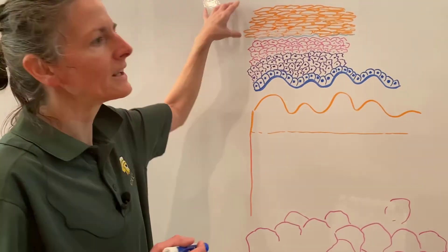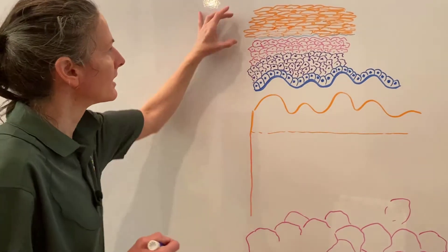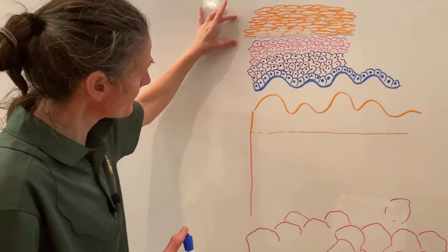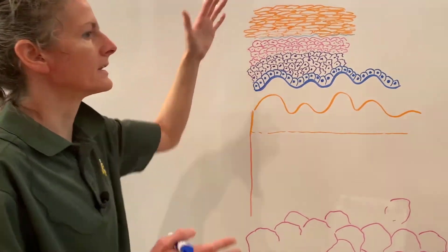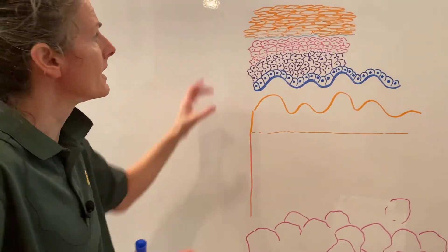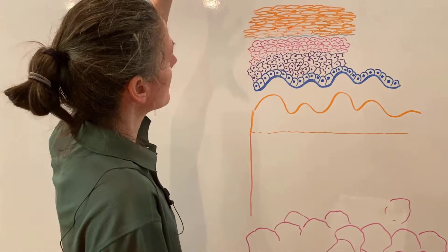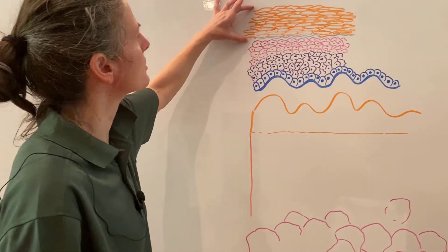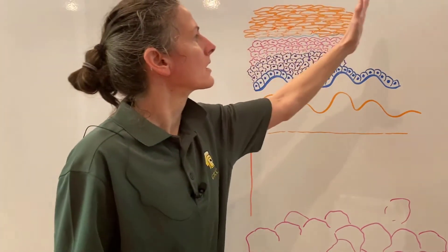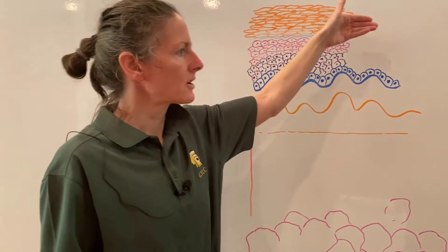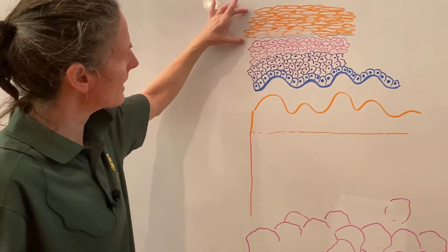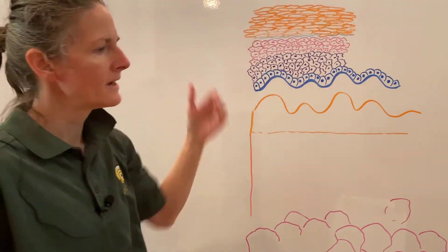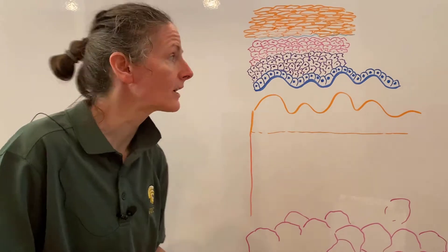The stratum corneum can be anywhere from 10 to 30 cell layers thick depending on the skin type — about 10 to 15 cells in thin skin and up to 30 cells in thick skin. These keratinized cells form the hard outer layer known as the horn layer or stratum corneum.